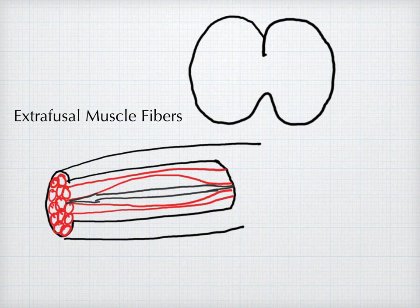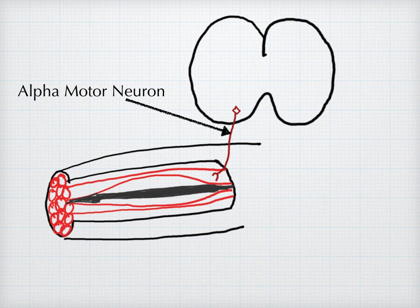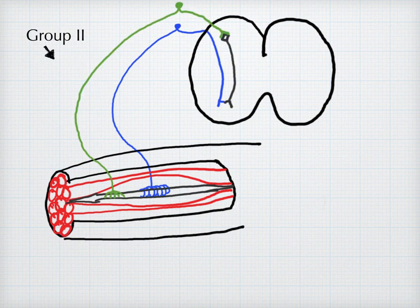Skeletal muscle is composed of bundles of extrafusal muscle fibers. These are innervated by the efferent alpha motor neurons in the ventral roots of the spinal cord and are supplied with afferent sensory nerve fibers which travel in the dorsal spinal roots, specifically group 1a and group 2.